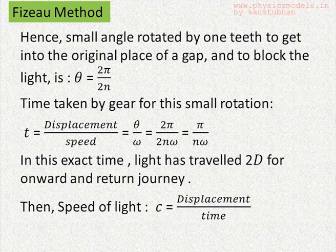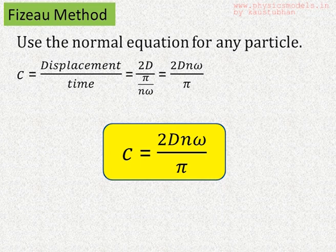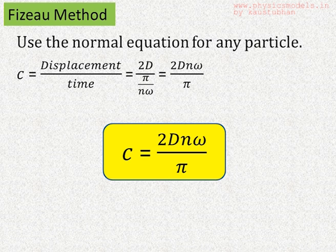So then we apply the simple equation that the speed of light is equal to displacement by time, and that's 2d divided by pi by n omega. That becomes 2d n omega divided by pi.